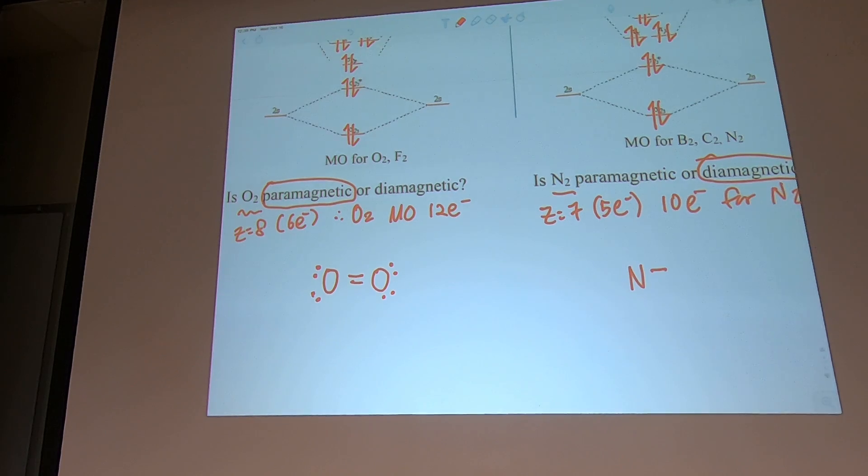Nitrogen has a triple bond, and the Lewis structure is correct for N2. Therefore, oxygen is what we call a chemical radical. Let me show you the video.